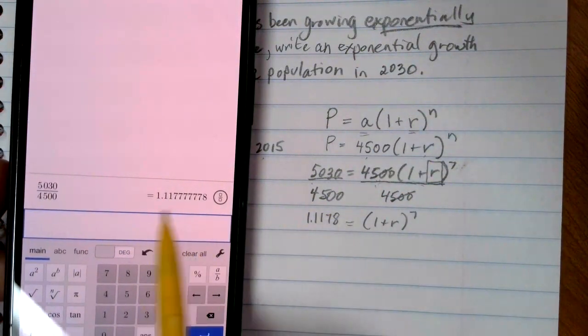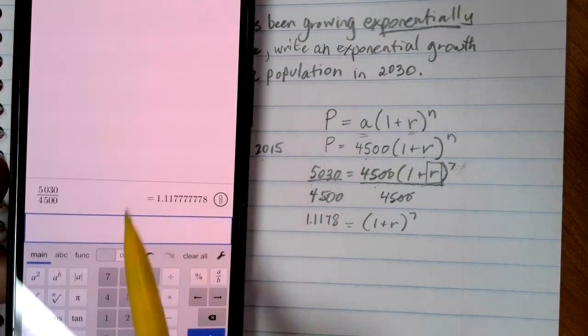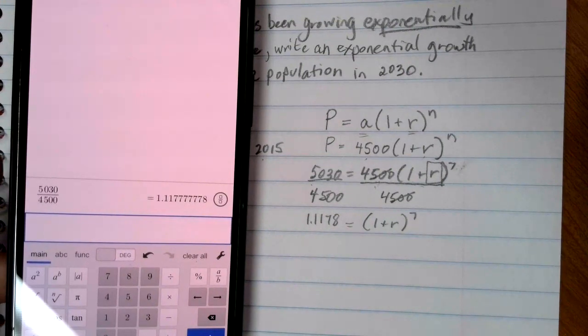On the left-hand side, I can just do that math. So it's 5030 divided by 4,500, and I get 1.1177, we'll call it 1.1178 on my paper.